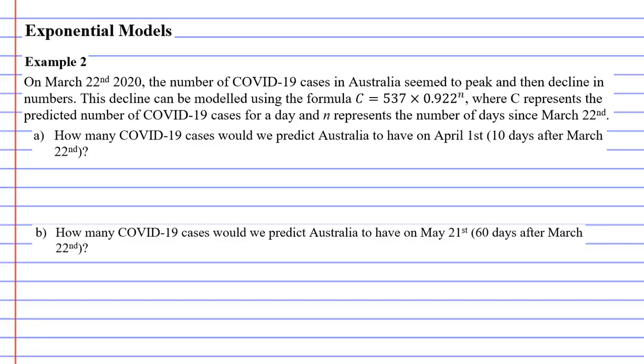In this video, we're going to complete example 2. It says on March 22nd, 2020, the number of COVID-19 cases in Australia seem to peak and then decline in numbers. So this is talking about exponential decay.